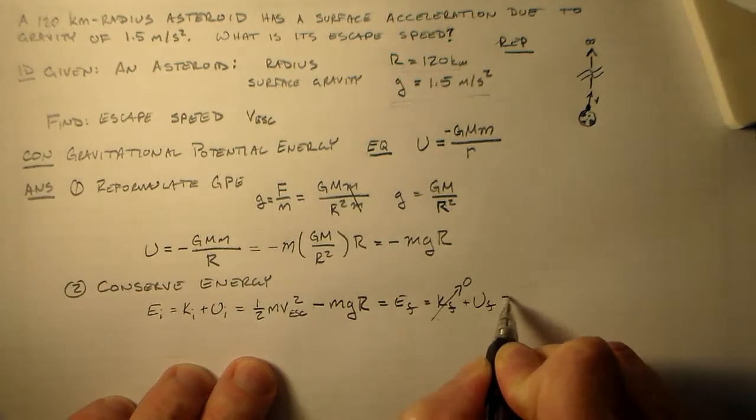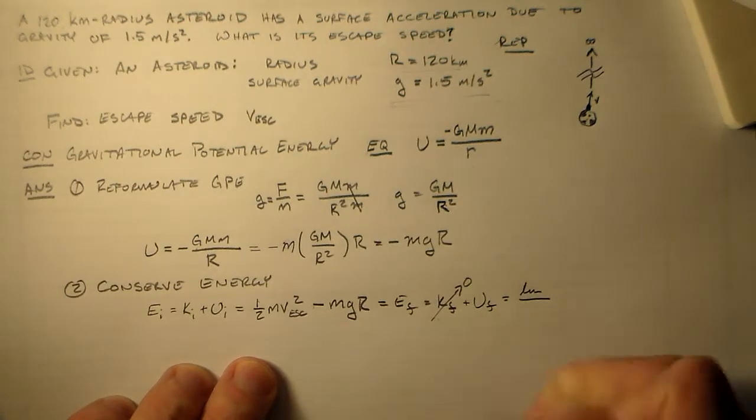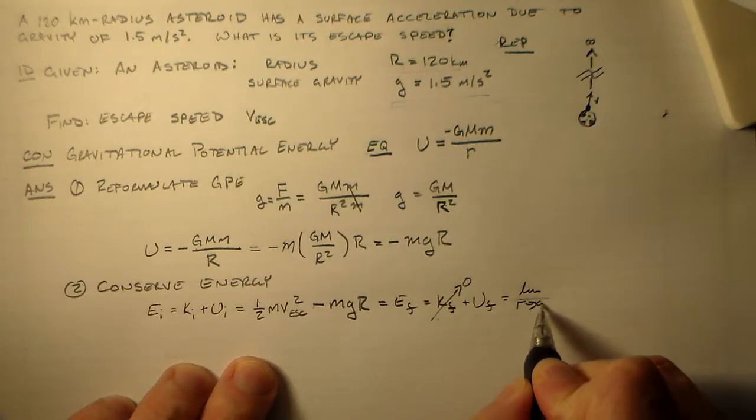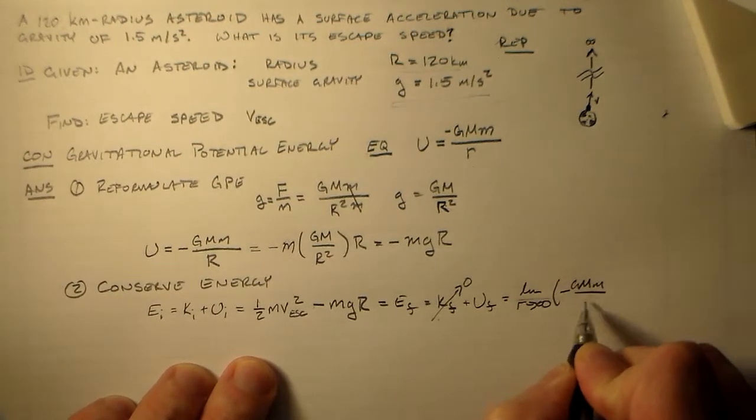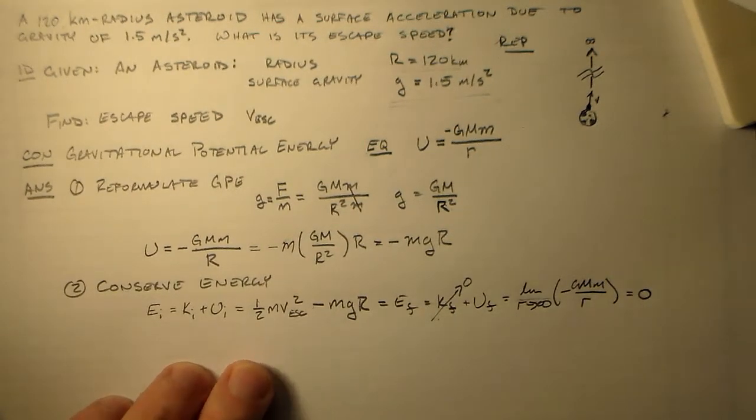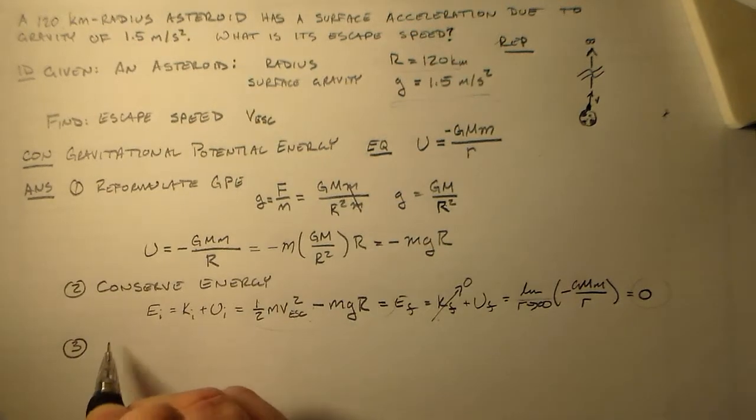And then we have my U final, which is equal to the limit, as R approaches infinity, of minus GMm over R. And that limit is zero. Okay? So, that's all I need to do for my conservation law, is figure out this. So, this thing is equal to zero. We're good. Right? We can use that to solve for v.